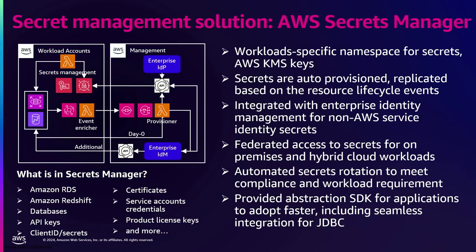There are many credentials needed which are not AWS-native — think about service accounts, client IDs, client secrets needed for API calls, or API keys themselves. These come from your enterprise identity management system. These credentials are automatically onboarded into Secrets Manager in the namespace we talked about. The advantage is that the application team doesn't need to work on these low-level things — they can focus on solving application problems, while credentials are delivered in a safe and sound manner for them to consume at runtime.